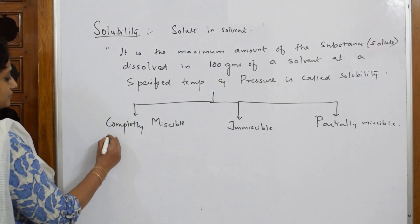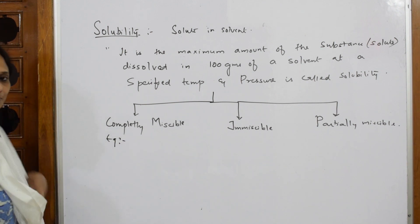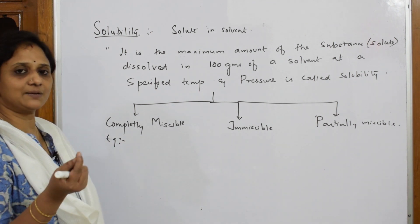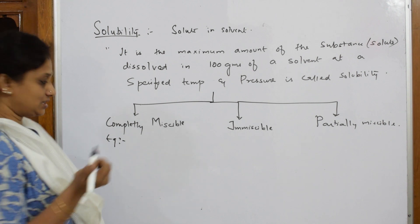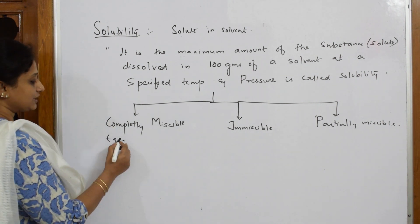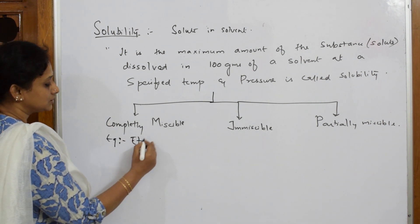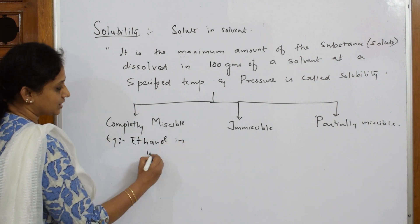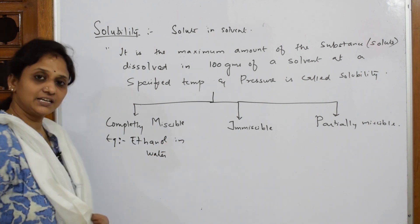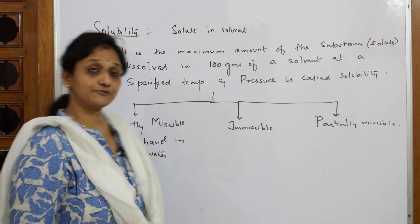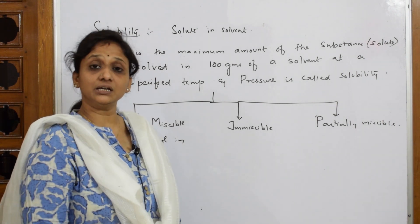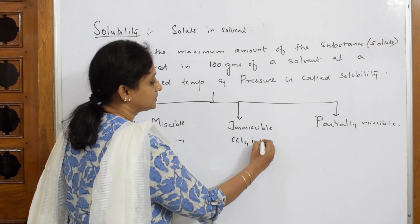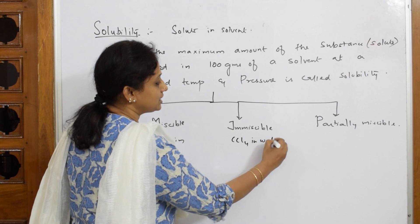For examples: ethanol dissolved in water — they are completely miscible, forming a colorless solution. For immiscible solutions, carbon tetrachloride in water is completely immiscible — both form separate layers, which you can separate using a separating funnel.